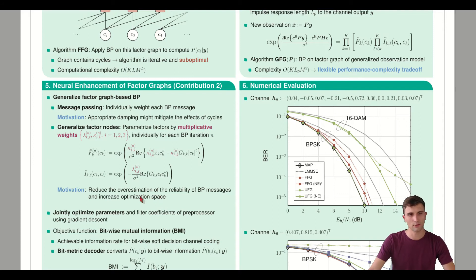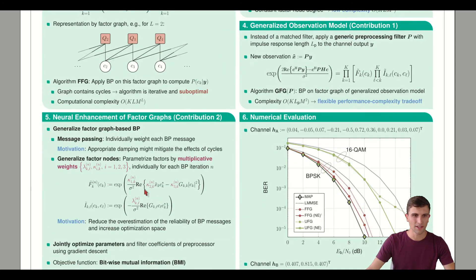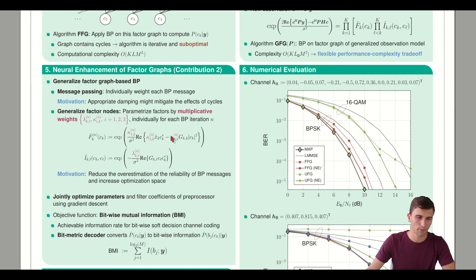We can also bring some intuition into this. The 1 over sigma square is basically the SNR. From previous works on the Ungerberg model, we know that the main problem is that the messages tend to overestimate the reliability. By dampening the SNR, choosing kappa or lambda smaller than 1, we can feed our factor graph with a lower SNR than the channel actually has, and thereby regularize the messages.